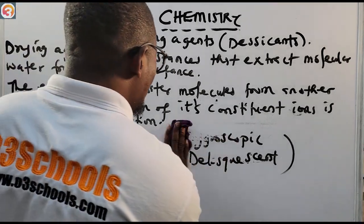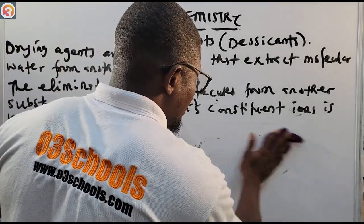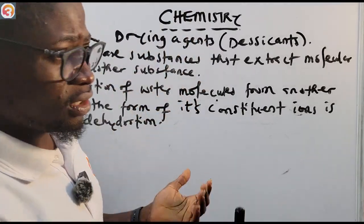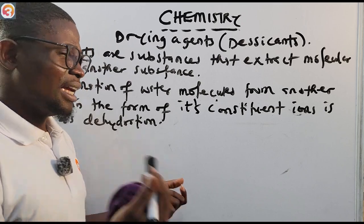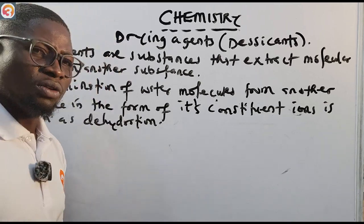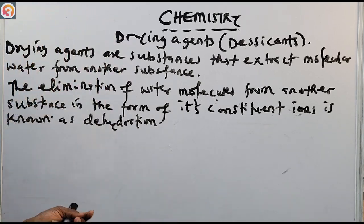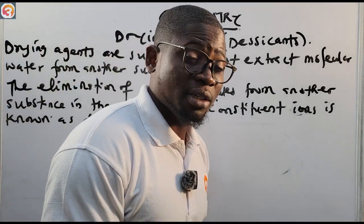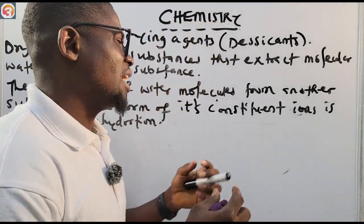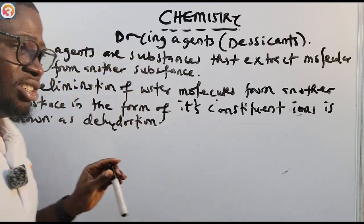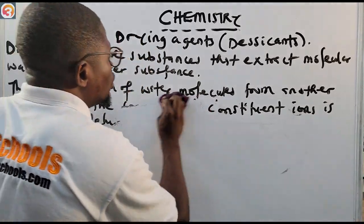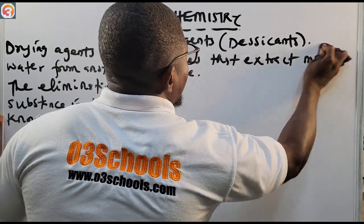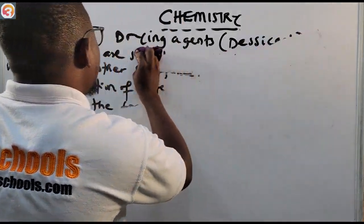In the last episode we talked about some drying agents — calcium oxide, concentrated tetraoxosulfuric acid, calcium chloride, copper oxide, and others. So let's look at those drying agents and the gases they dry. This episode is going to be short, so do not run away.